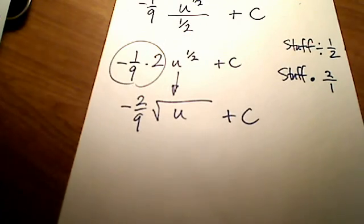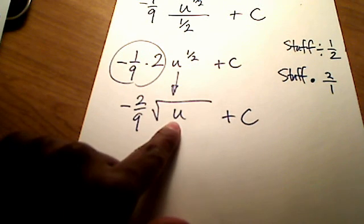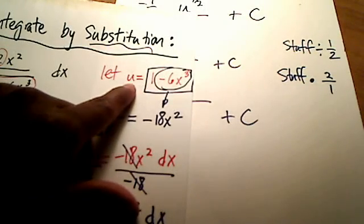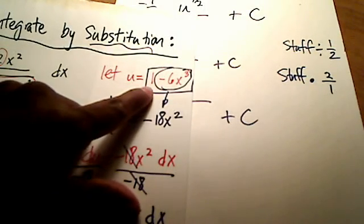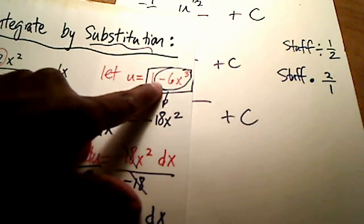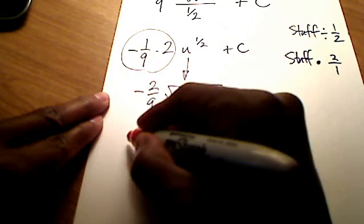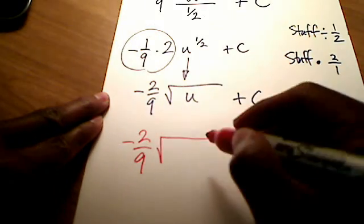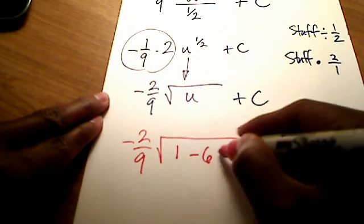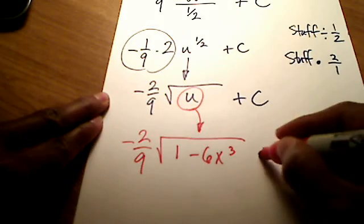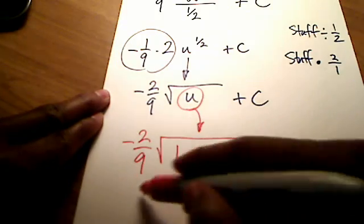Last thing is, I don't want this answer with respect to u. I want this answer with respect to x. So let's put back in place of u what we substituted it out originally as 1 minus 6x to the 3rd. We can do that. My final answer then is going to be a negative 2 ninths. Inside of the square root, I'm going to have 1 minus 6x to the 3rd because that's what u is actually equal to. And then plus c, final answer.